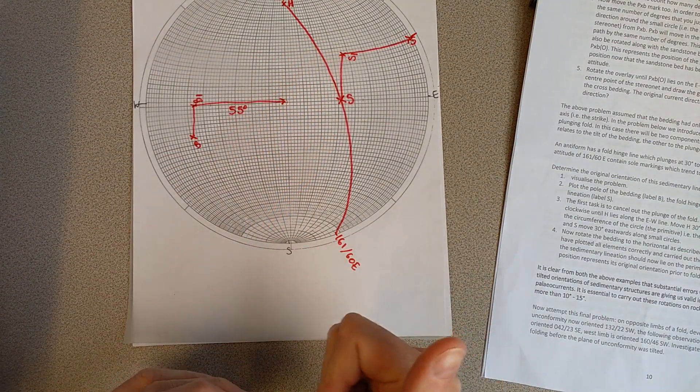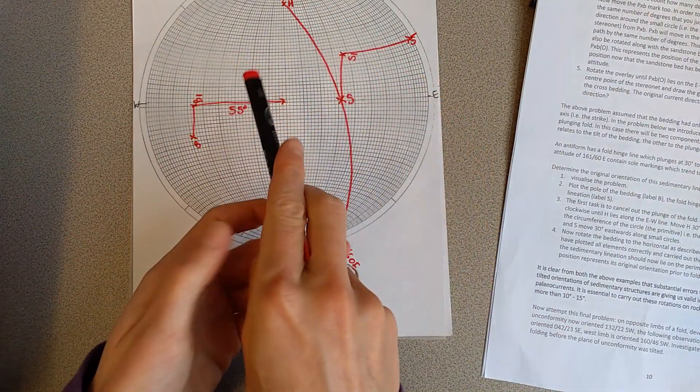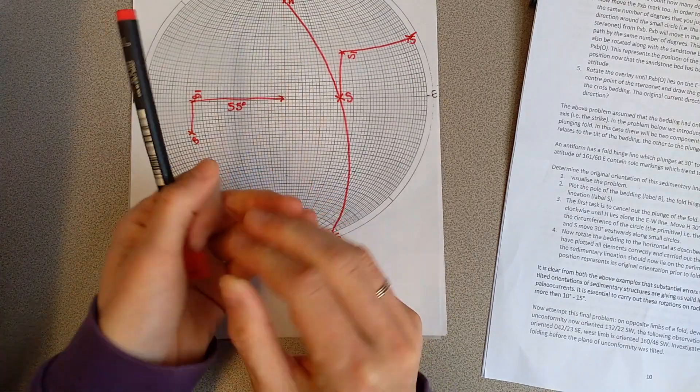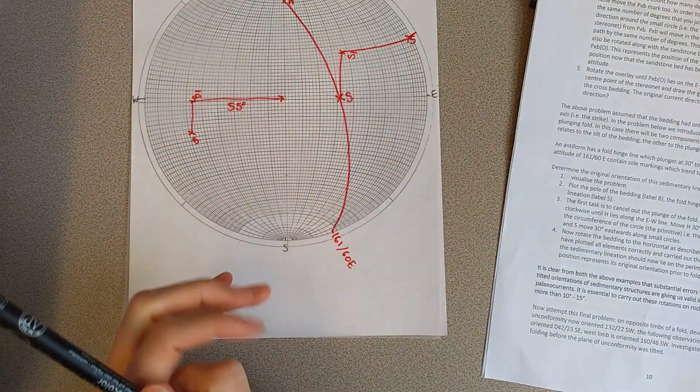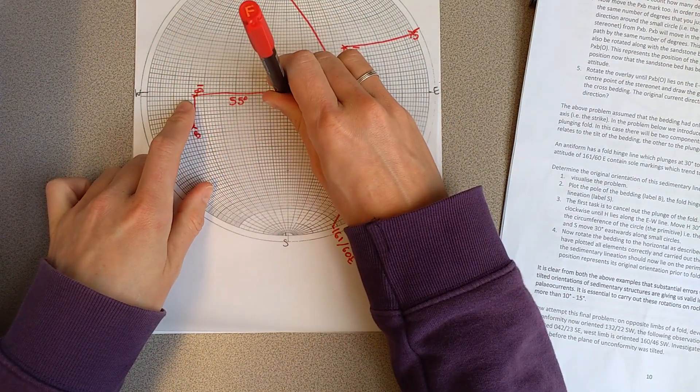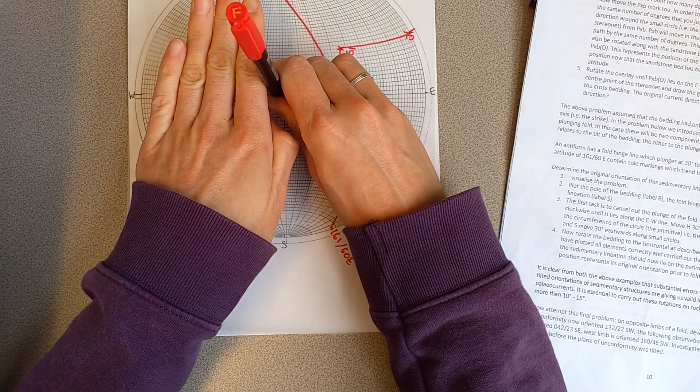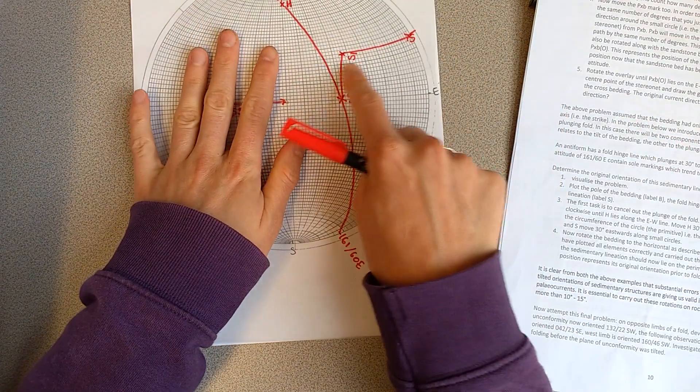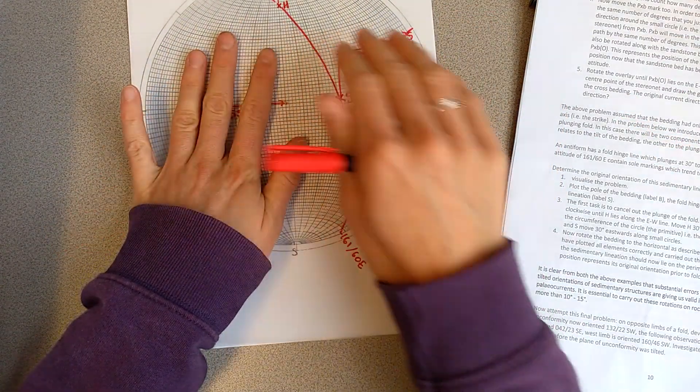So what we've done is we initially canceled out the plunge of the hinge. And then now what we've done is we've unfolded because we've moved the pole to the bedding, to the middle, which means our bedding is now flat and we've restored those sole marks that are on the bedding to horizontal.